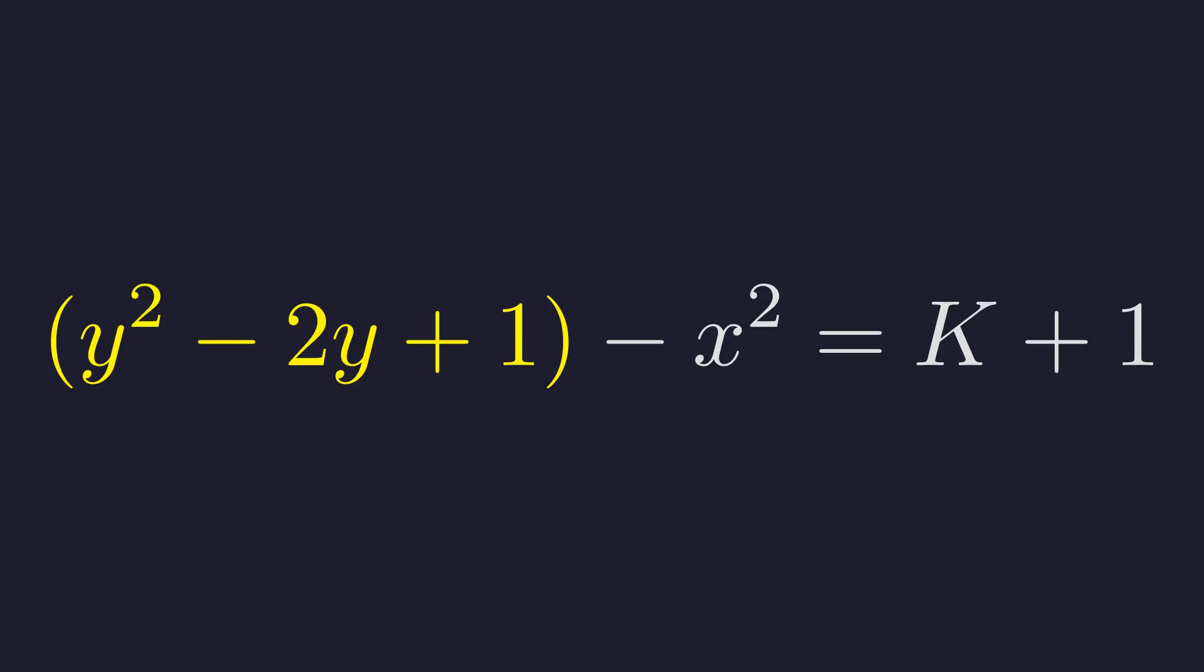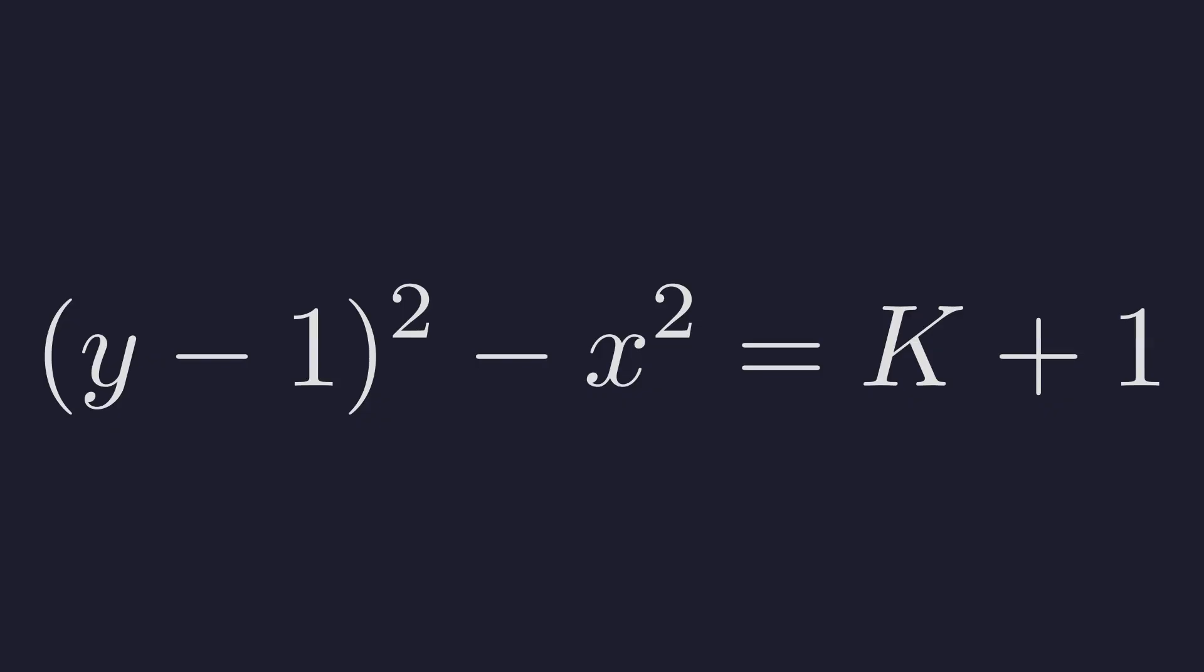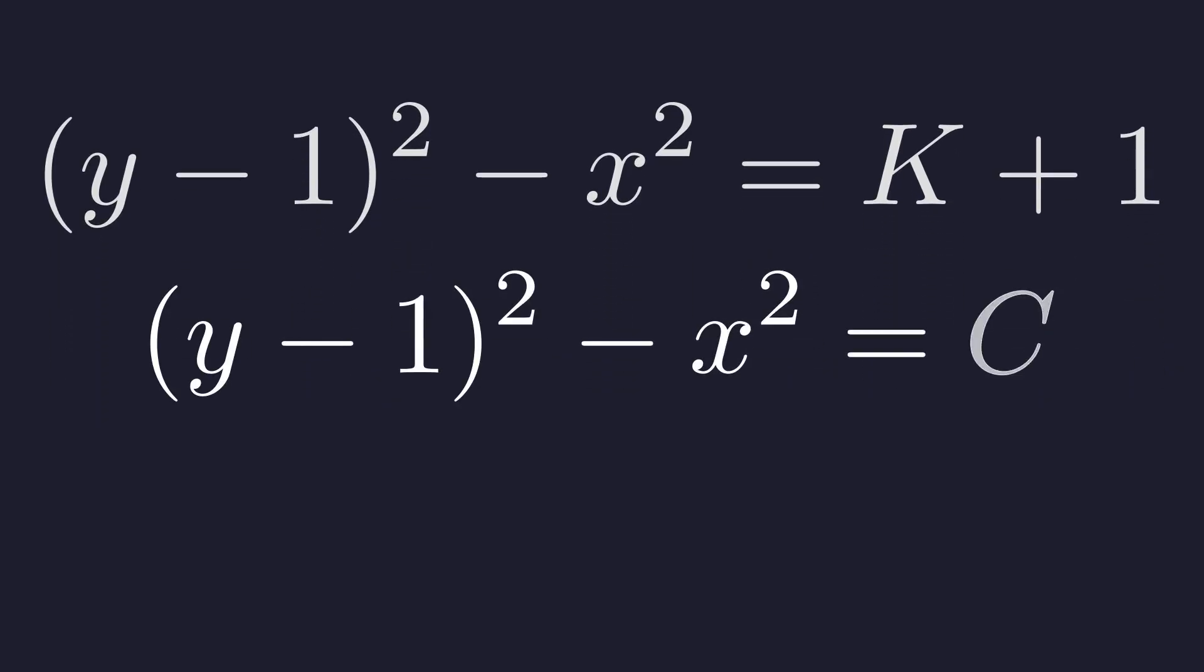This quadratic expression can now be factored. It becomes the quantity y minus 1 squared. The right side, k plus 1, is just another constant. Let's call it c. This is our final general solution.